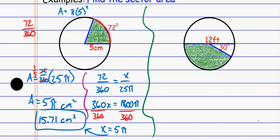Looking at the next one, I want the sector area here. Be careful — when we look at the angle given, the 30 degrees is not the angle that represents the shaded area. The angle that represents the shaded area would be 150 degrees for the whole thing. Using arc addition: this is 30 degrees, the whole semicircle is 180, so the portion we're looking at is 150. In terms of a fraction, this is represented by 150 over 360.